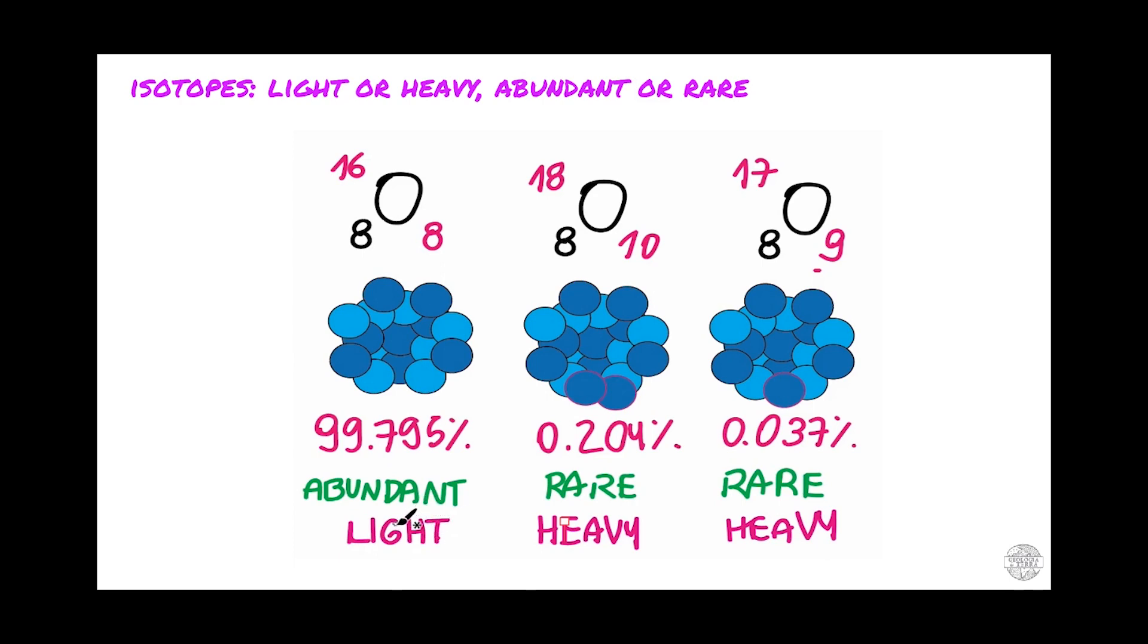We also need to notice that the heavy isotopes tend to be the rare stable isotopes, whereas the lighter tends to be the most abundant one.